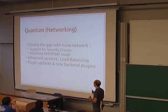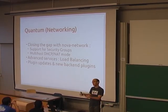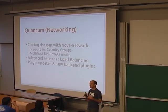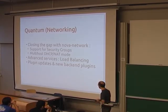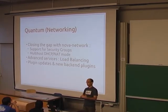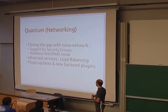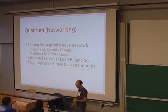Quantum is the networking component. The main challenge for them is to close the gap with Nova networking so that Quantum is a superset of the features still in Nova rather than just an alternative. They pushed support for security groups and multi-host DHCP/NAT, which were present in Nova but not yet in Quantum for the Folsom release. They also introduced advanced services — specifically a load balancing feature within Quantum, the first of several higher-level networking features. There are also lots of plugin updates, adding support for hardware like Brocade and F5.